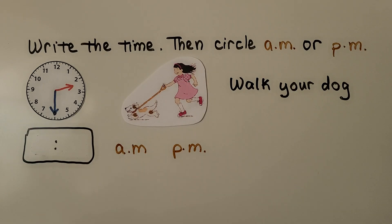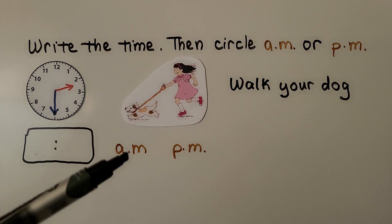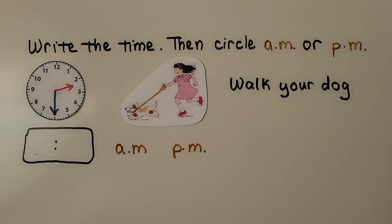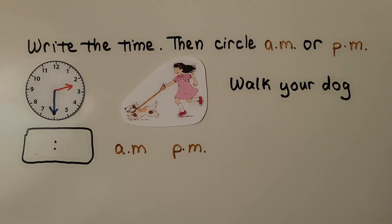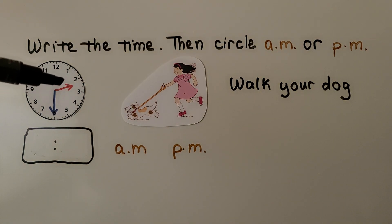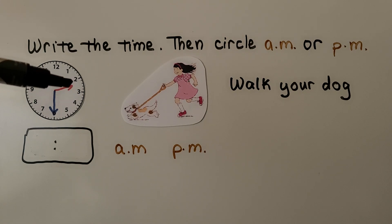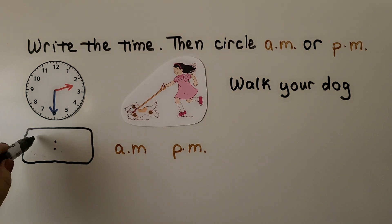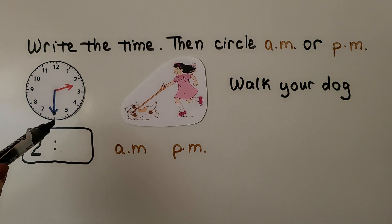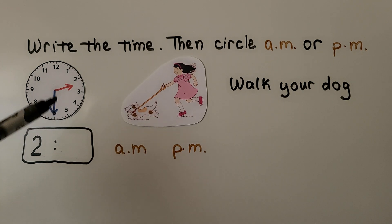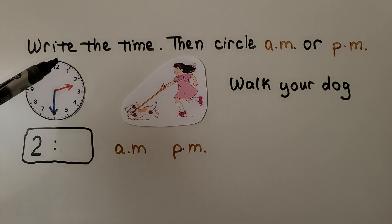Here it says to write the time we see on the clock face, then circle AM or PM. The task is 'Walk your dog.' We look at the hour hand — it's in between the two and the three, so it's not three yet; it must still be two. The minute hand is pointing to the six, which means 30 minutes. So the time is 2:30.